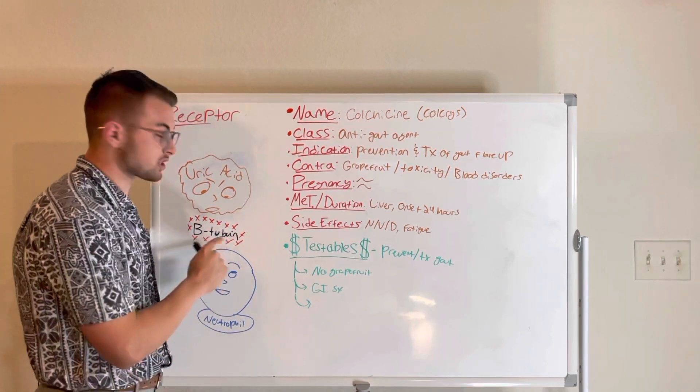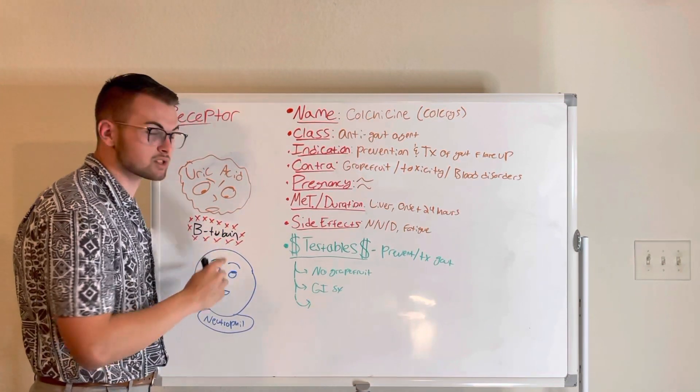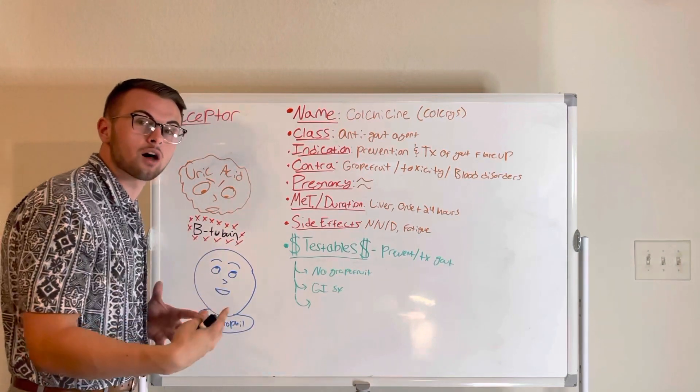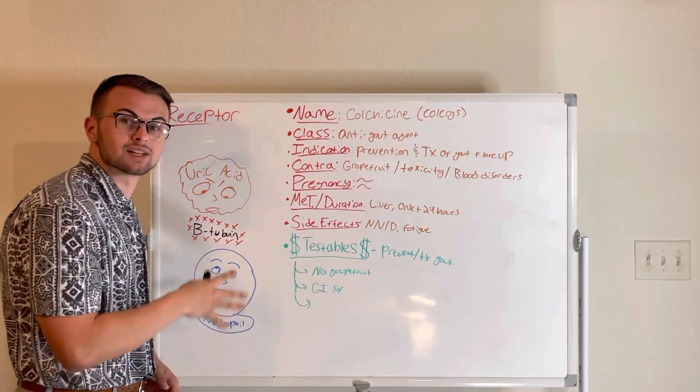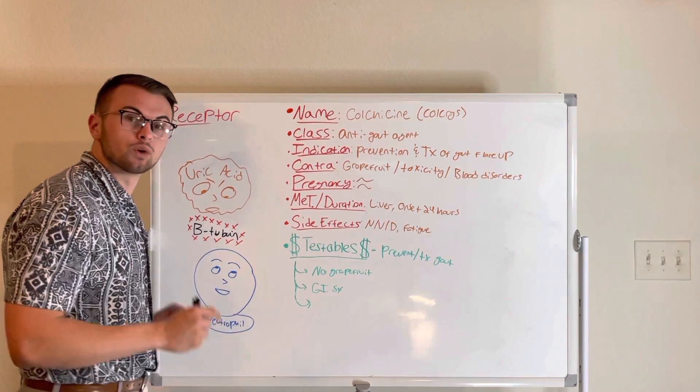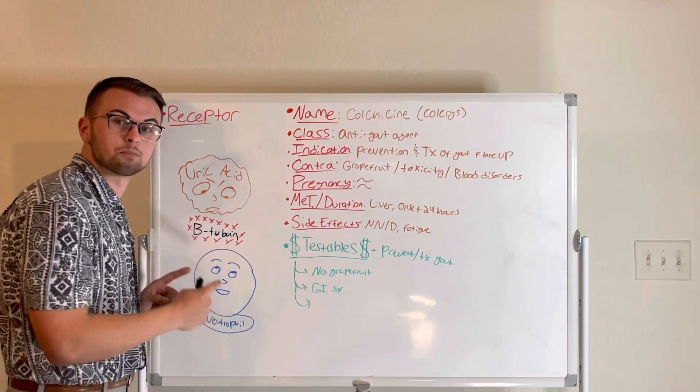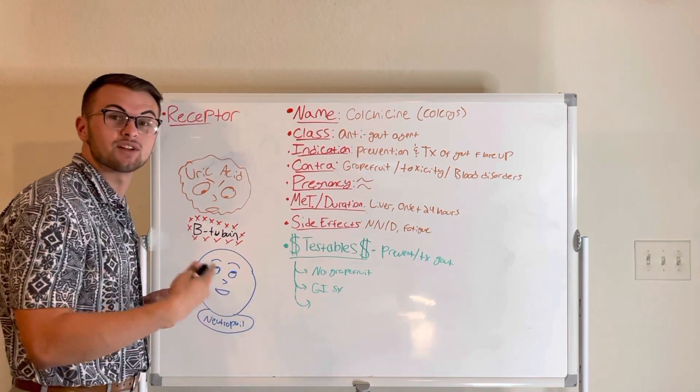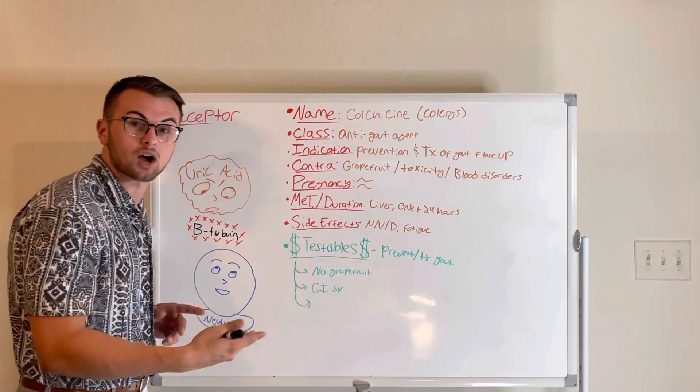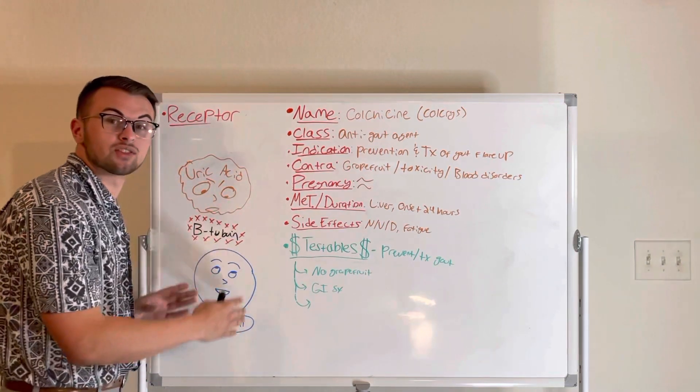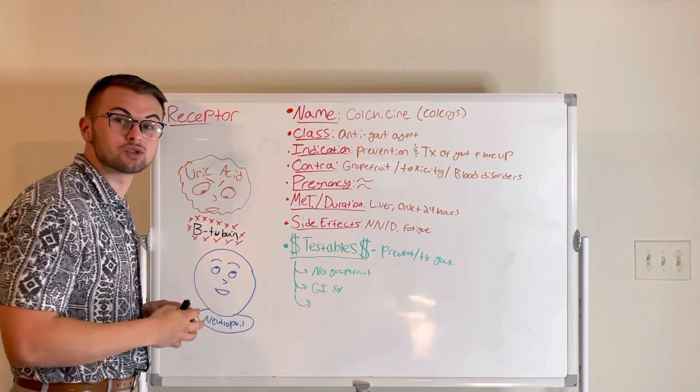This substance beta-tubulin normally creates long chains or polymers of microtubules inside of our cells. When colchicine inhibits beta-tubulin, it eventually prevents our neutrophils from doing their job, and we will not have the severe pain associated with a gout flare-up.